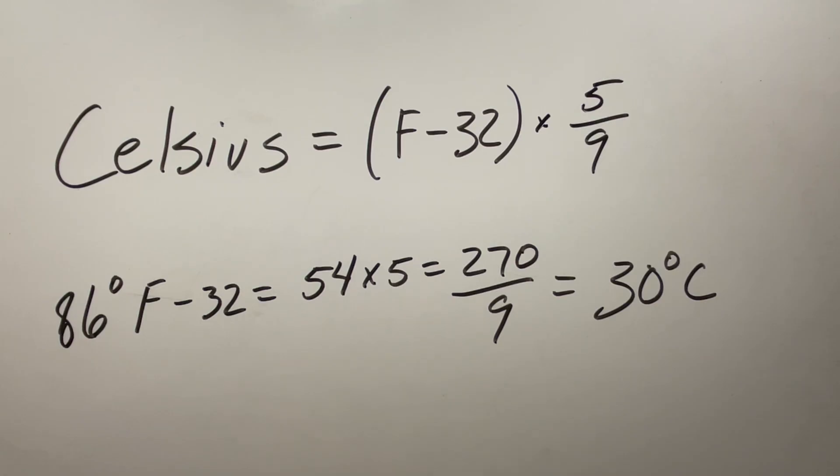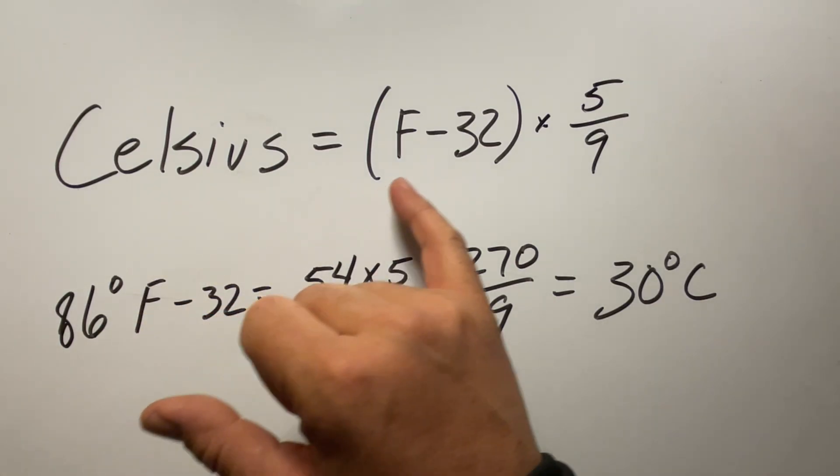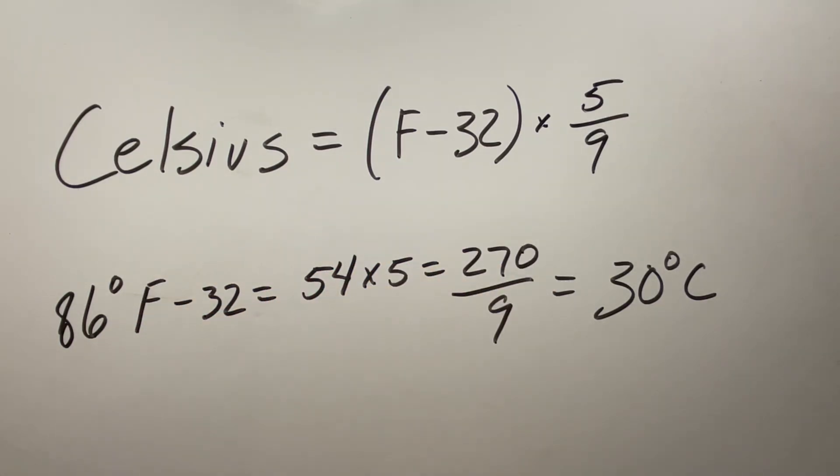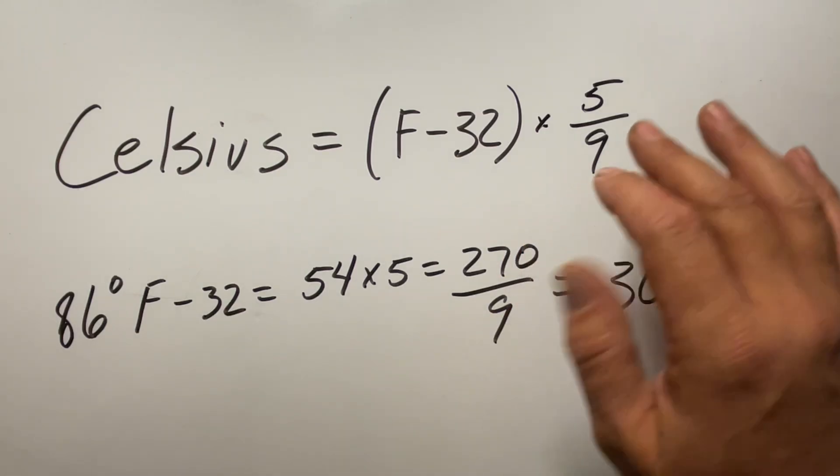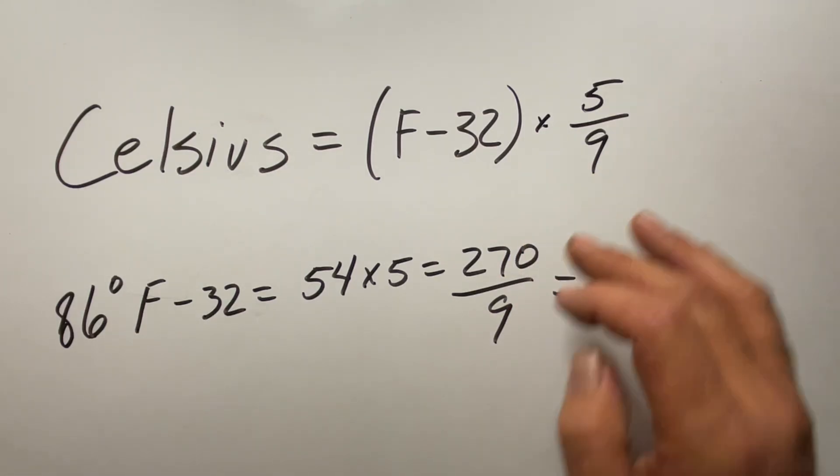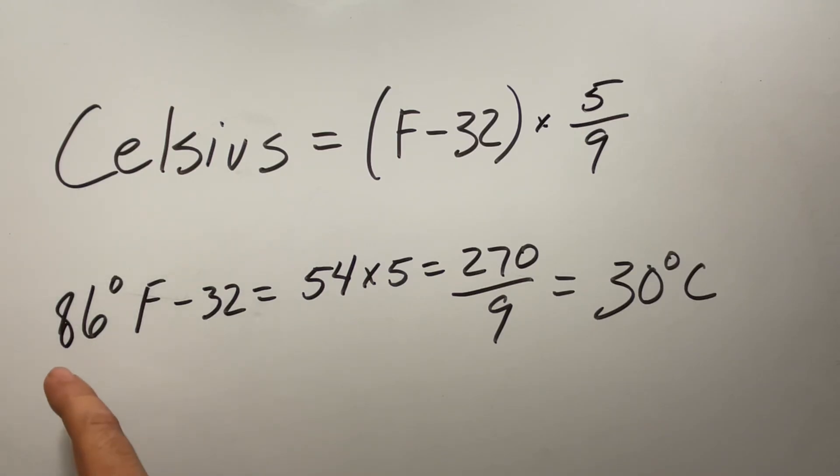So the standard formula for this is Celsius equals your degrees Fahrenheit minus 32, and then multiply that answer by 5 and divide by 9, or multiply by 5 ninths. And an example of that is 86 degrees Fahrenheit minus 32 will get you 54, times 5 is 270, divide by 9, will get you your final answer at 30 degrees Celsius.